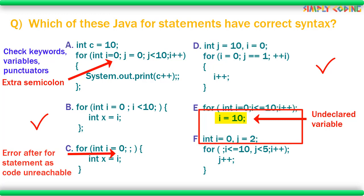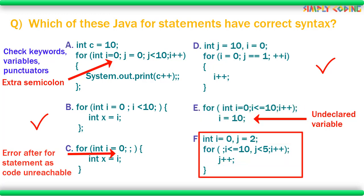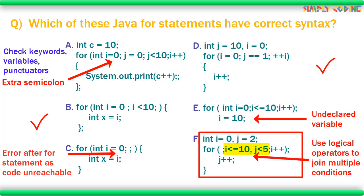The same is true if you try to use any variable which is declared inside the for block outside of it. We know we can use multiple initializations and increments by using a comma. Can we use multiple test conditions also by using comma? No, we cannot. If we want to combine or add multiple conditions, then we have to use logical operators like AND or OR.